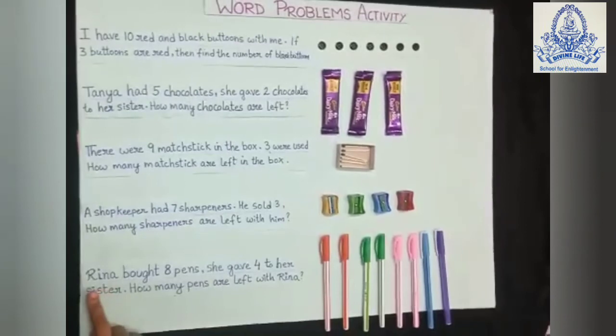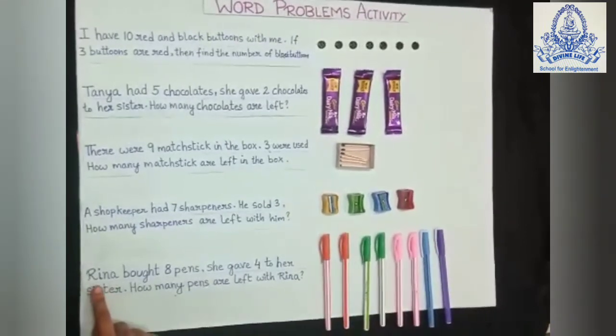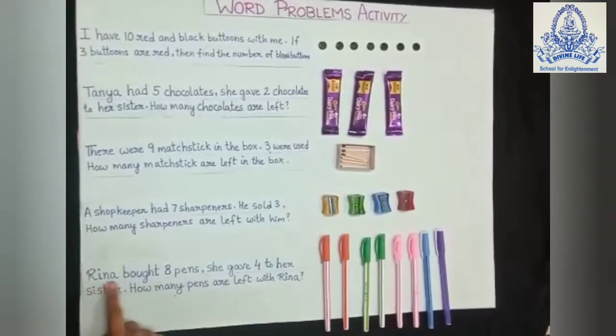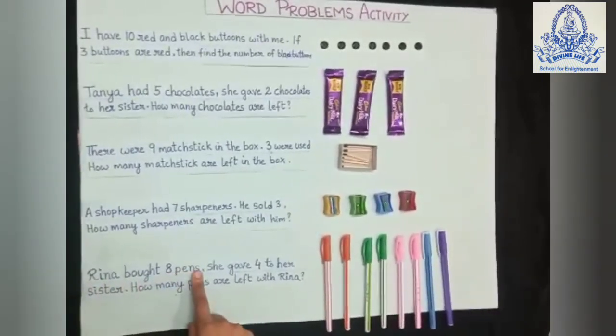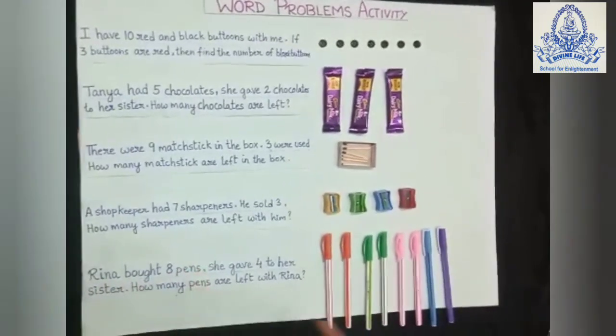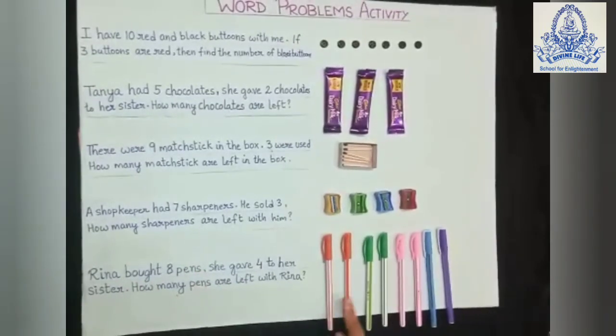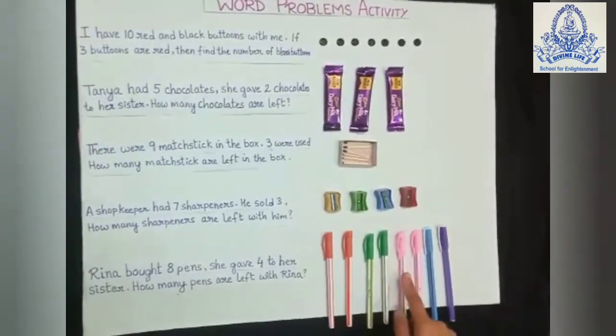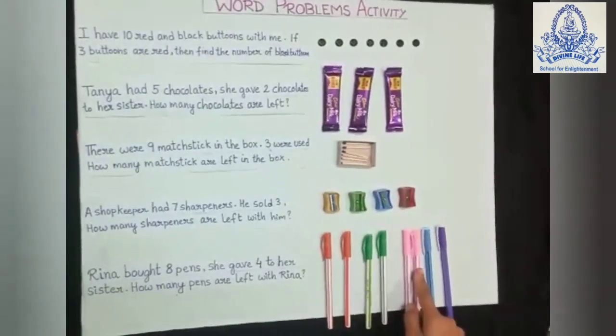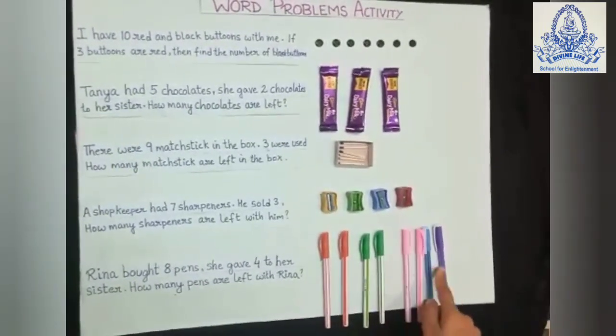Now number 5. Reena bought 8 pens. Let me count: 1, 2, 3, 4, 5, 6, 7, 8.